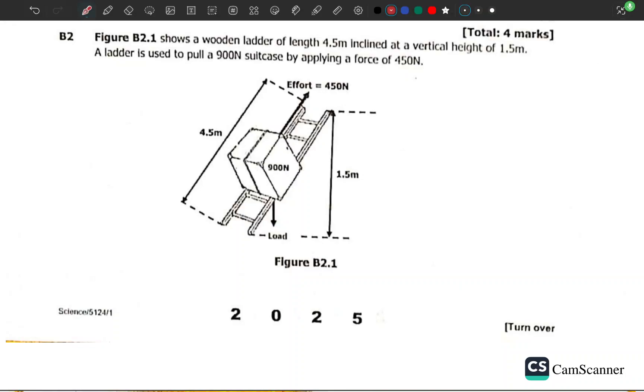Move on to question number B2 of this 2025 GCE Science Paper 1, Physics. Figure B2.1 shows a wooden ladder of length 4.5 meters inclined at a vertical height of 1.5 meters.